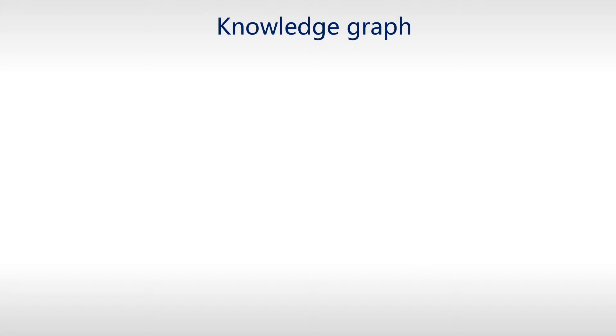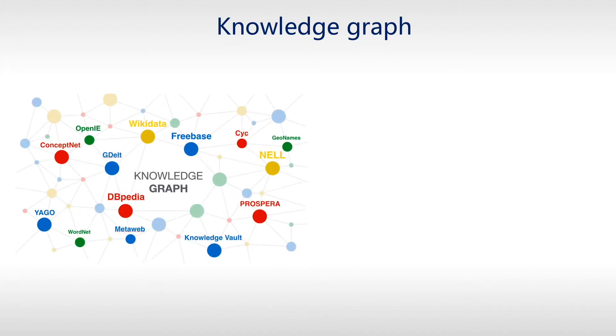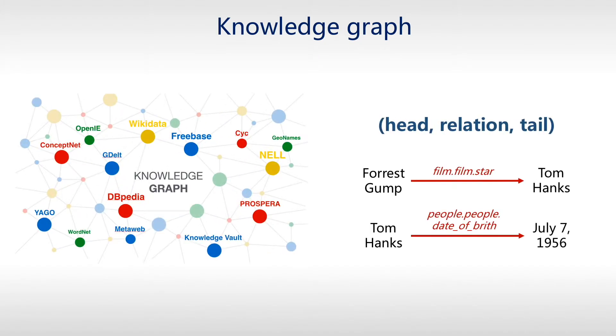Knowledge graphs are a new type of side information which can be harnessed to improve recommendations. A knowledge graph is a heterogeneous graph in which nodes correspond to entities and edges correspond to relations.